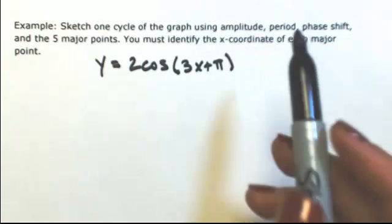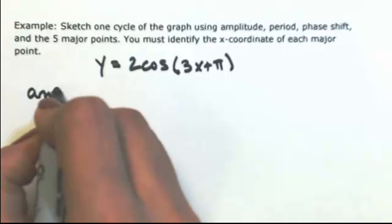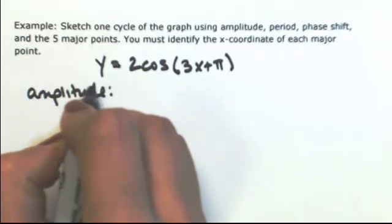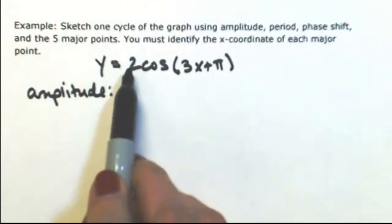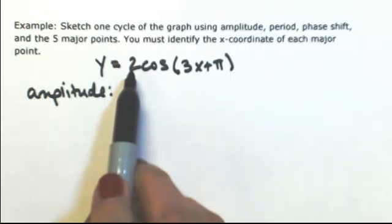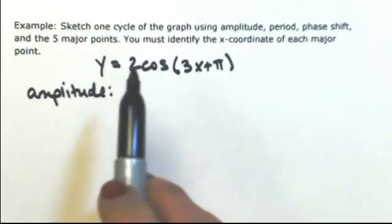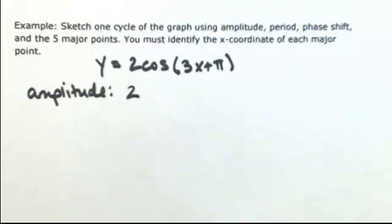The first thing we have to do is find the amplitude. The amplitude is found by looking at the number in front of our function, which is cosine. Because it's positive, that would be our amplitude. If this were negative, we would take the absolute value. So the amplitude is 2.